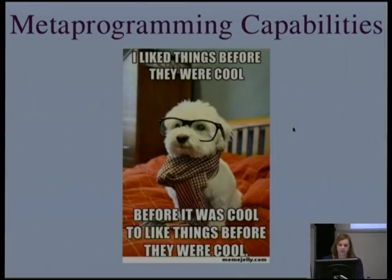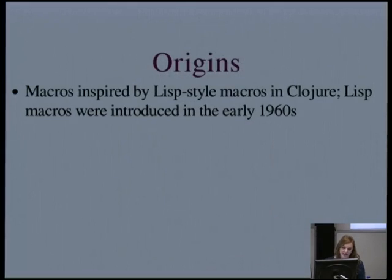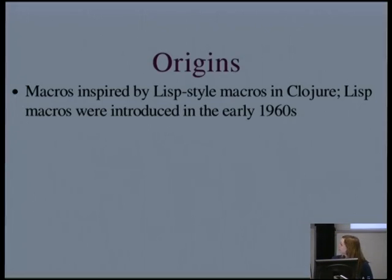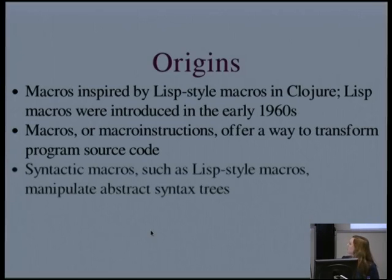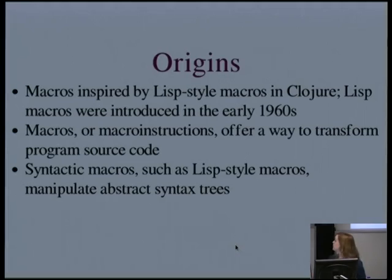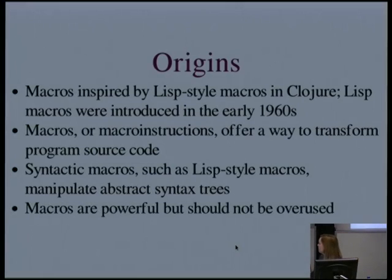The last ingredient I want to look at is metaprogramming — support for code generation. Macros were inspired by Clojure's macros in Elixir, which were in turn inspired by Lisp macros which go way back to the 1960s, so again this is a very old idea. Macros, in other words macro instructions, offer a way to transform code. These Lisp-style macros are syntactic macros. You also have textual macros which do more of a naive find-and-replace kind of thing in the source code, but syntactic macros can actually manipulate the abstract syntax tree so they're able to preserve the structure of the original program. The obligatory warning: macros are powerful but with great power comes great responsibility. If you find yourself using a macro when you could just use a function, you shouldn't be using a macro.